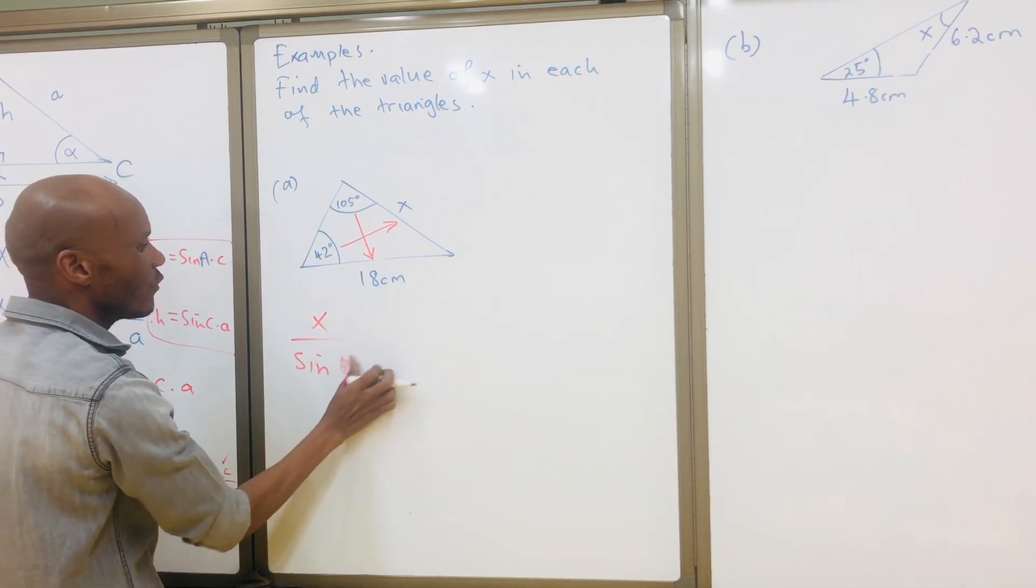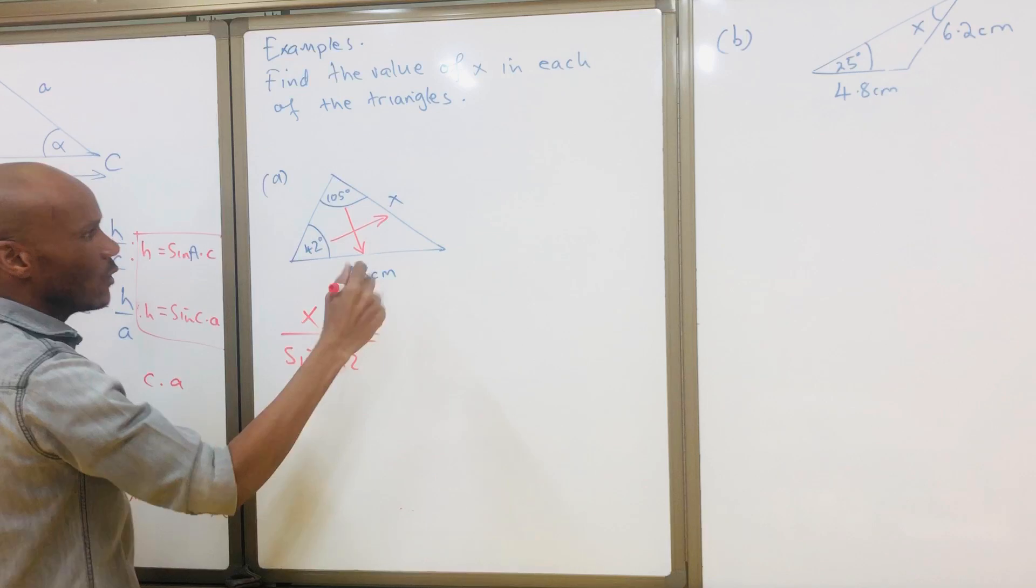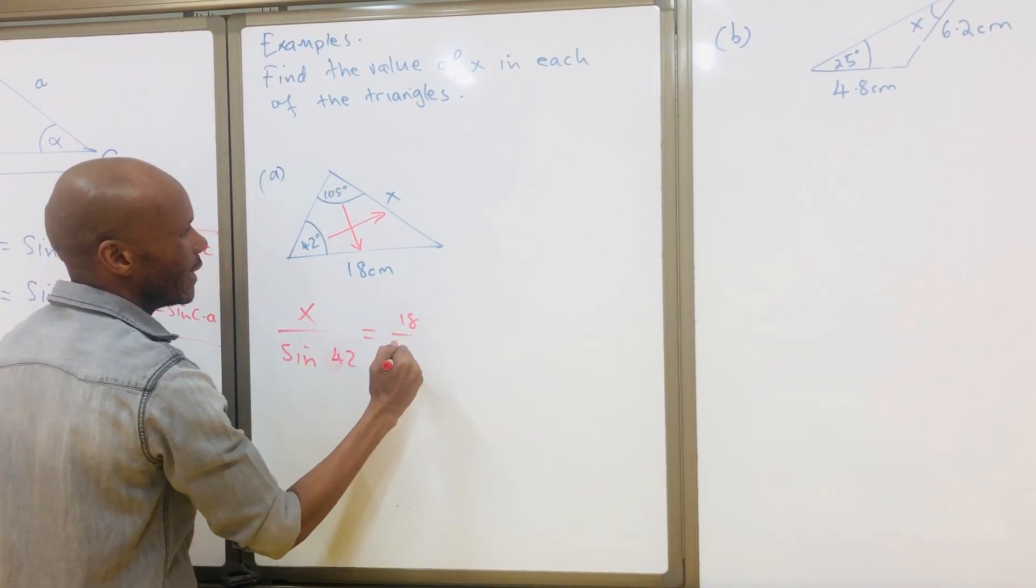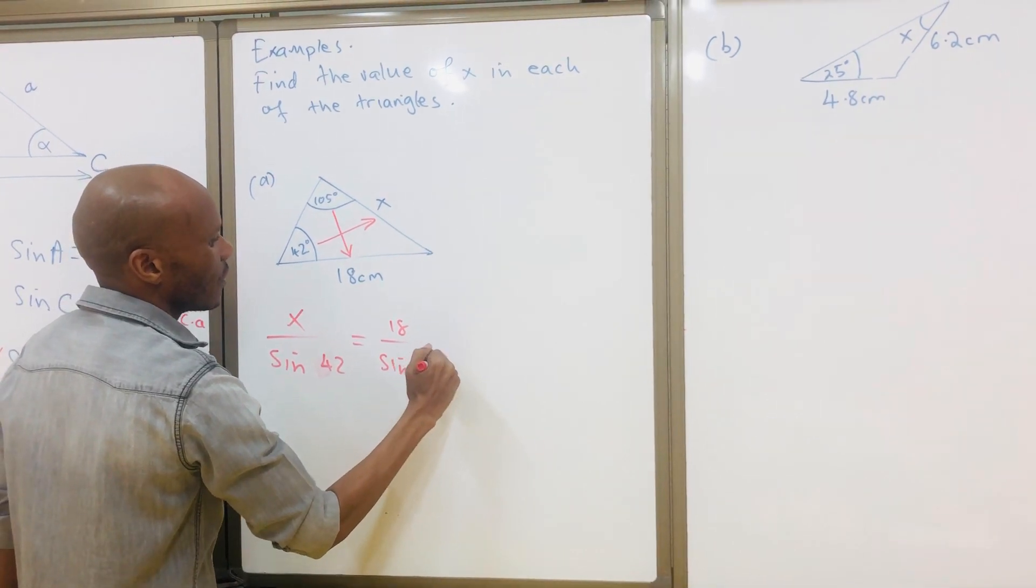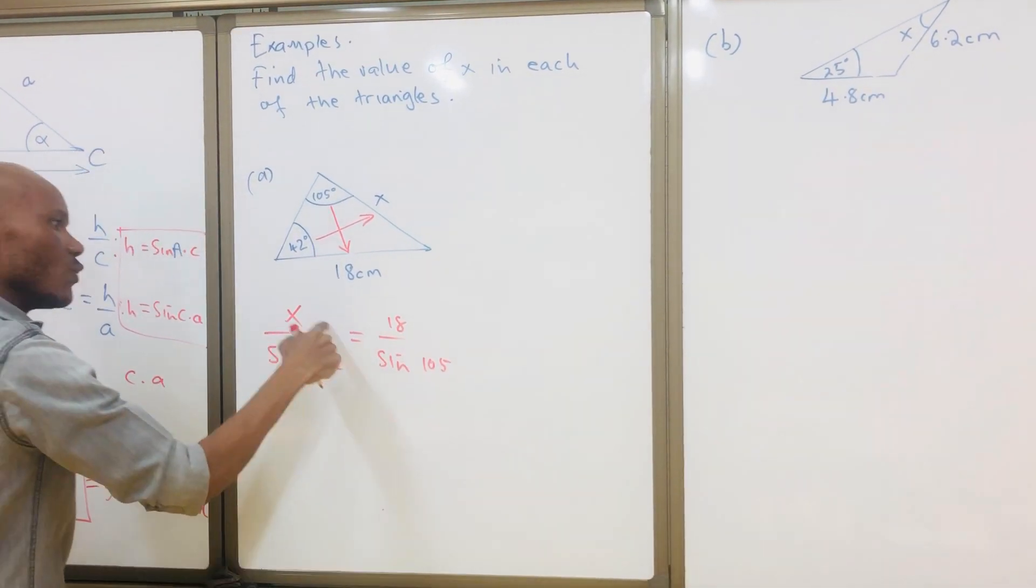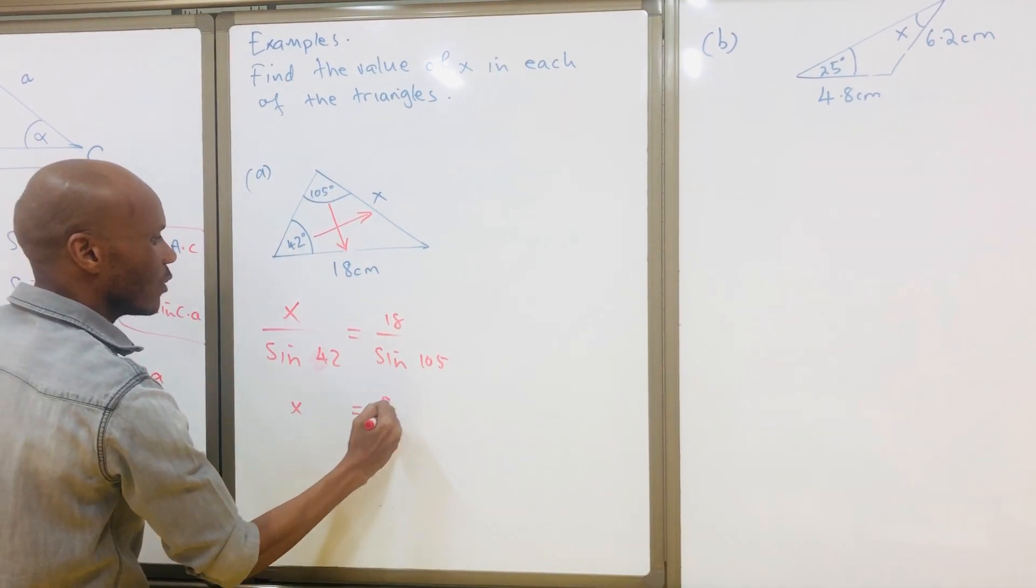When you cross multiply, your x will be equal to sine 42 multiplied by 18 over sine 105.